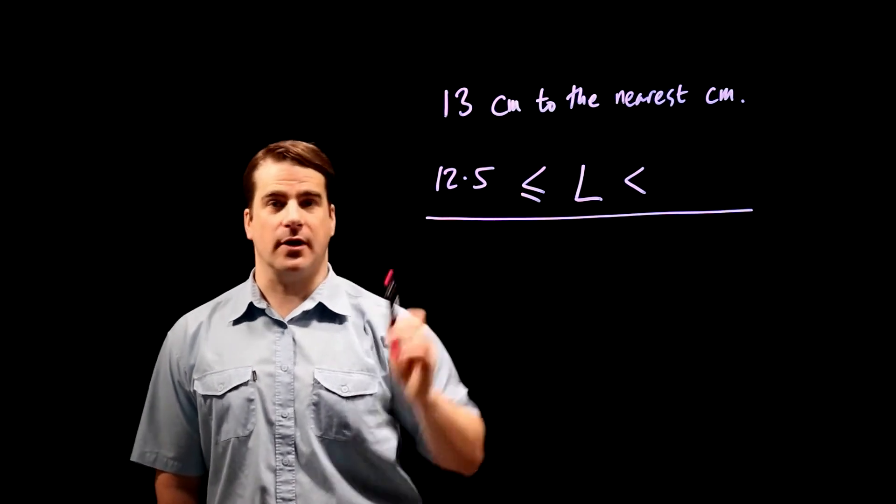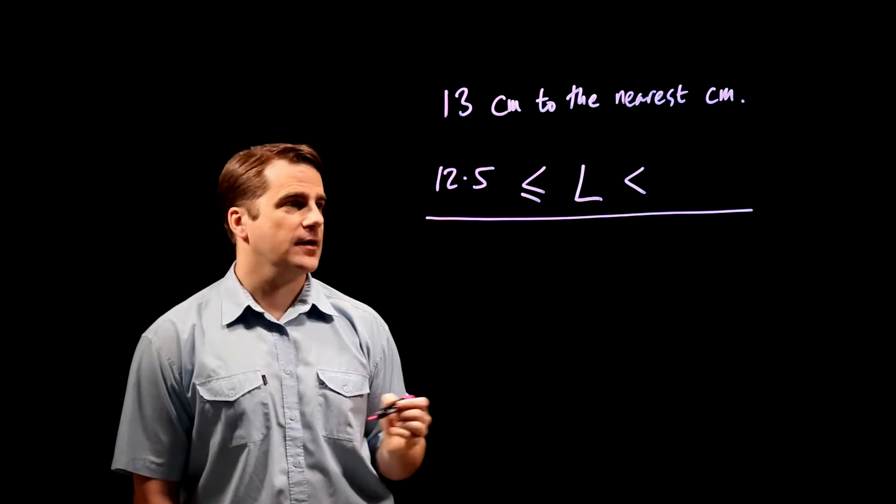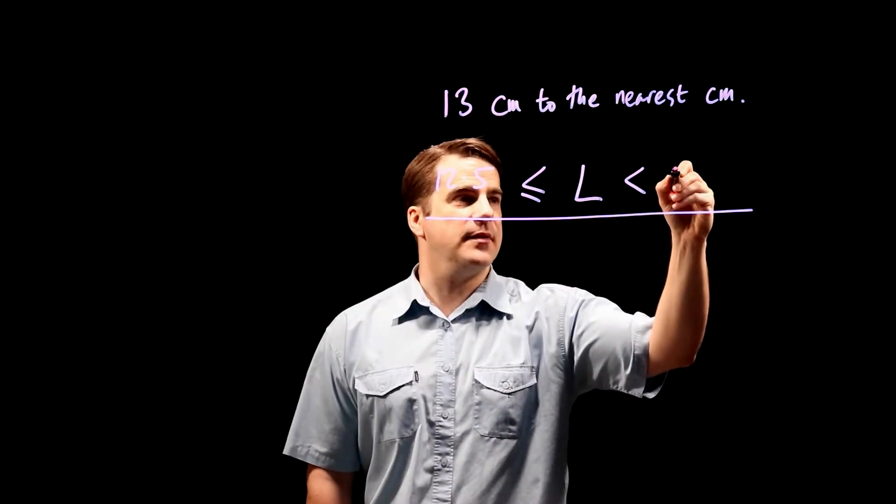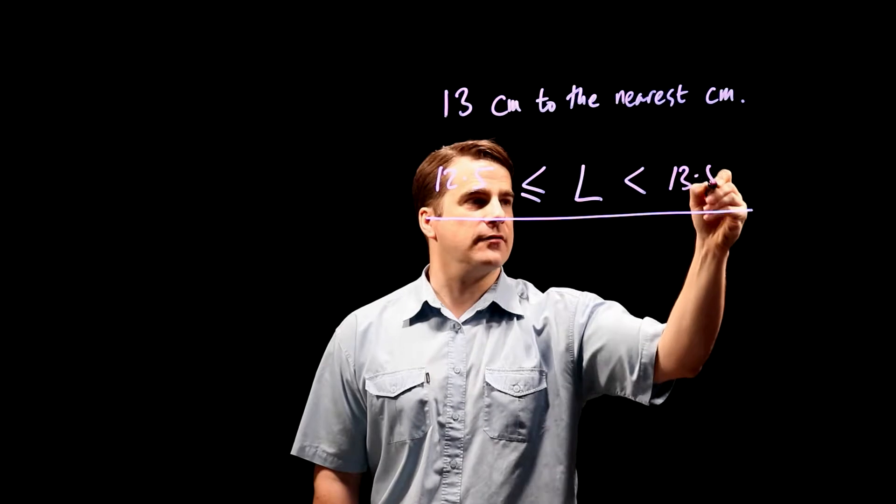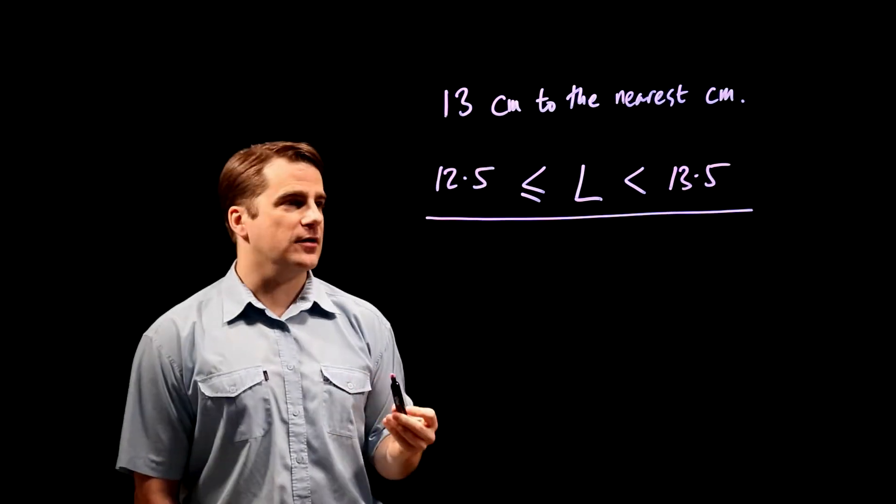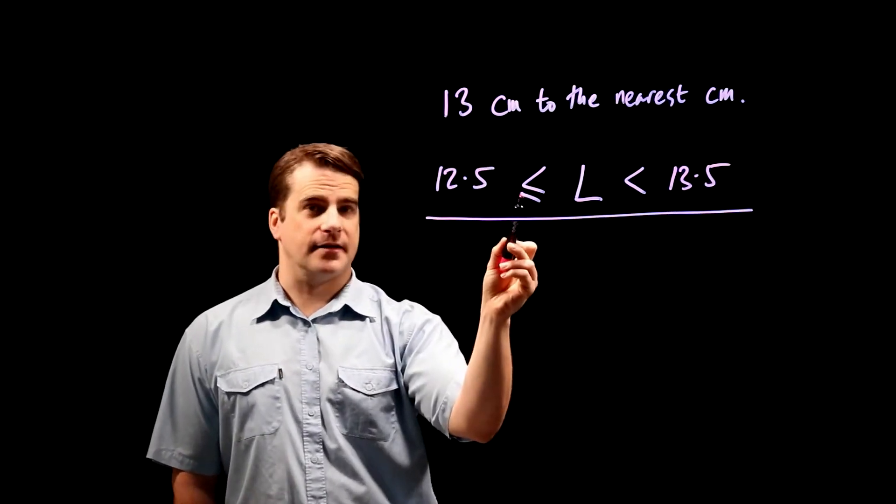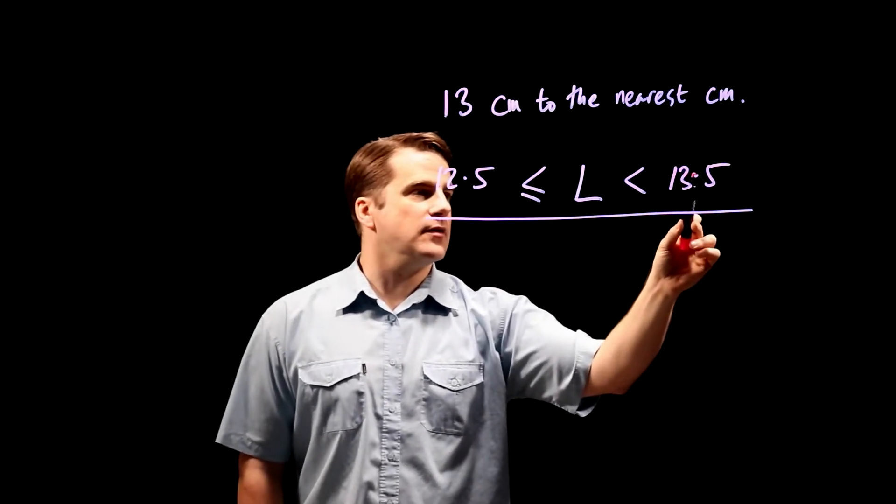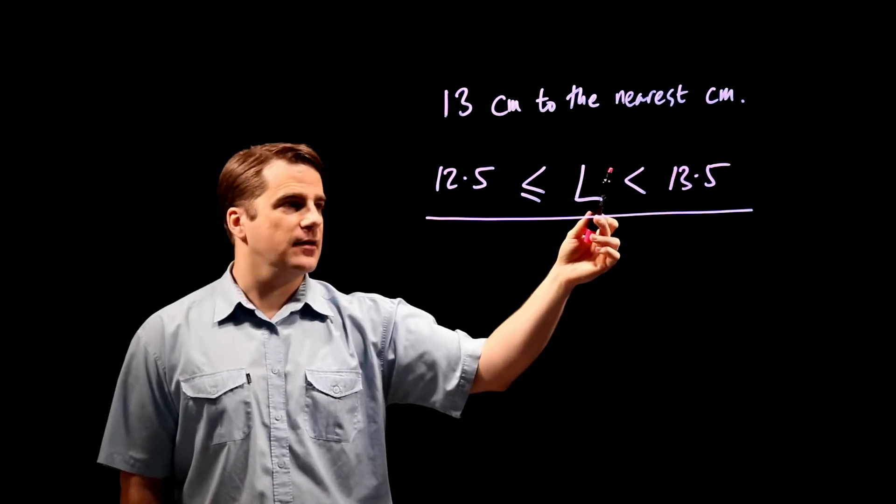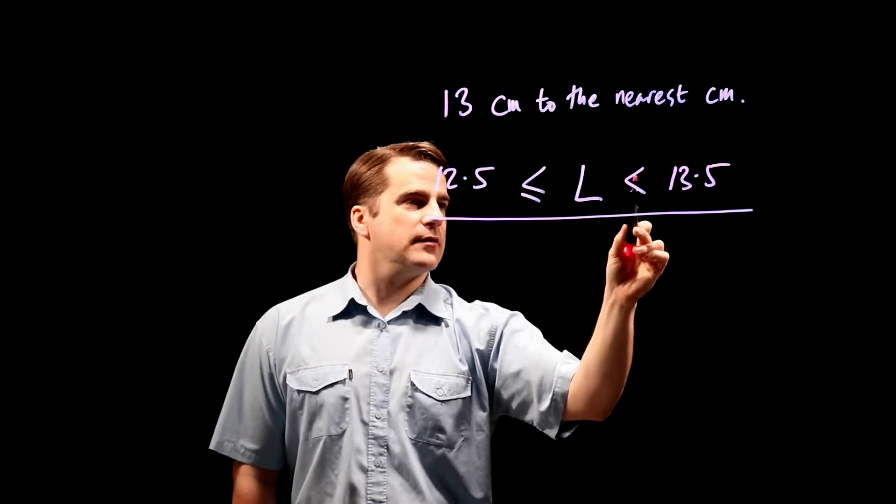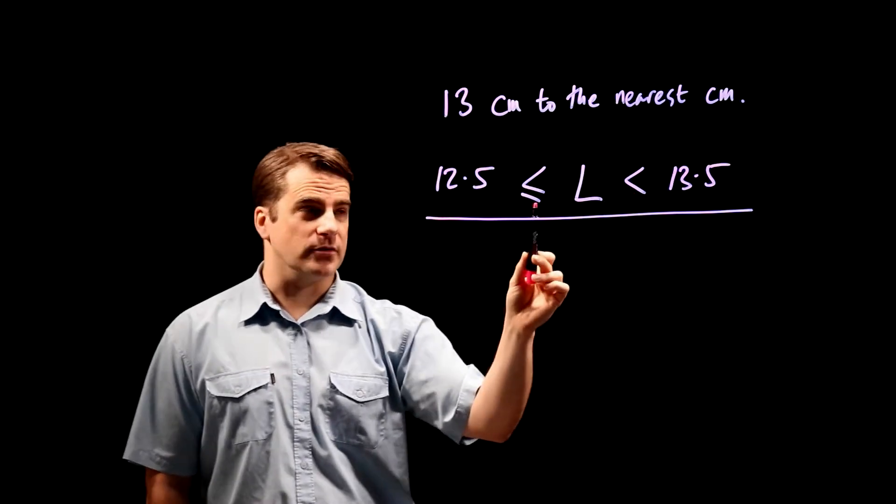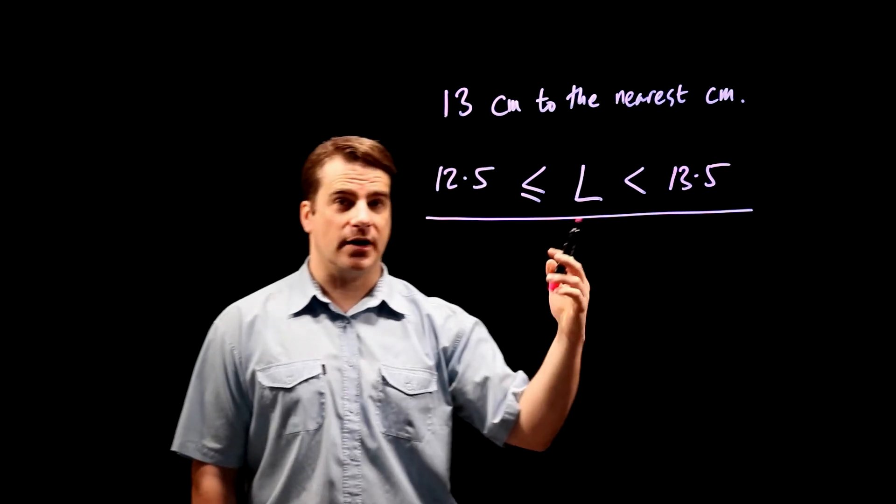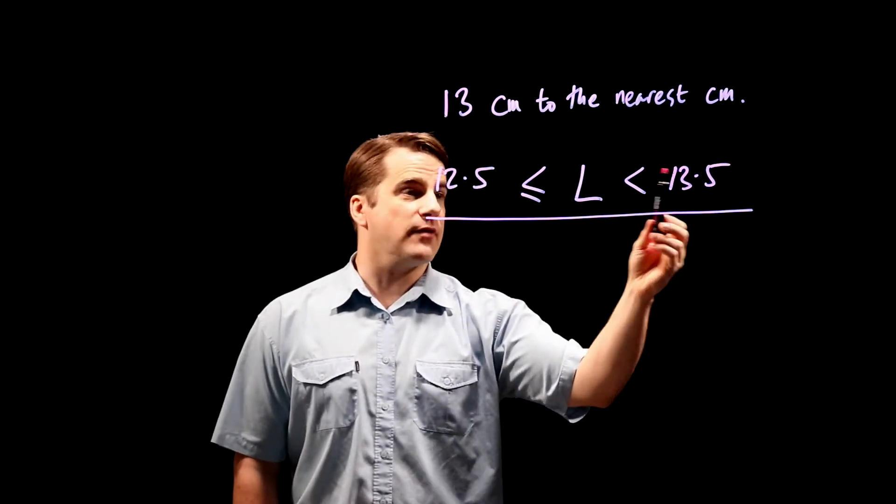And similarly, it must be less than 13.5, because as soon as you hit 13.5 you would round up to 14. So that's why it's only less than, not less than or equal to. If it were 13.49999 you would round down to 13.